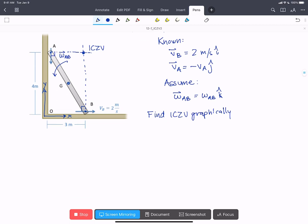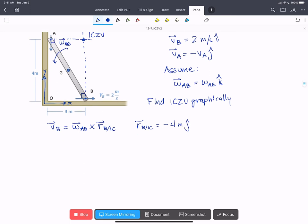So we can write that VB equals omega AB cross RB with respect to the IC. That's a bit simpler than using the relative motion equation, because this is a fixed-axis rotation equation. We can see pretty straightforward. Our value for RB with respect to the IC is going to be minus 4 meters in the j-hat direction. And so we can find omega AB.